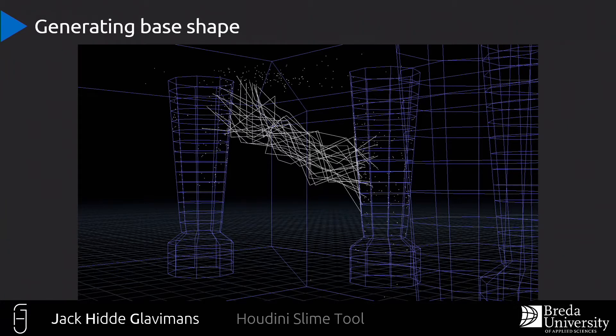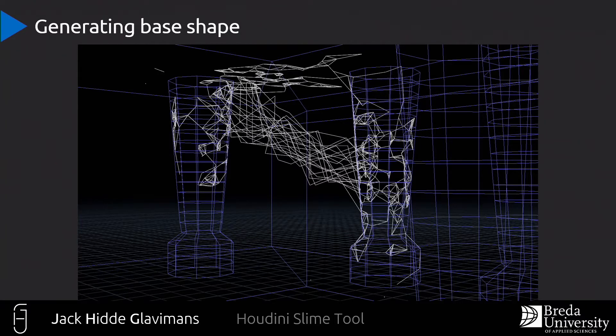The ends then get ray traced back onto the geometry, and the points that are close to the geometry generate even more points in geometry. I then use Connect Adjacent Pieces in Houdini to connect the points together and structure them around the environment.